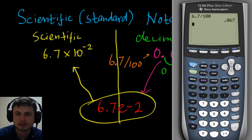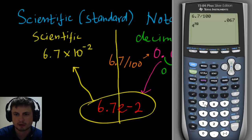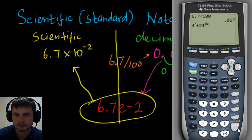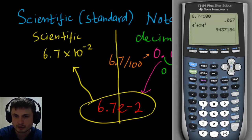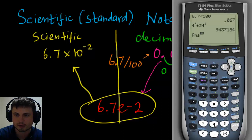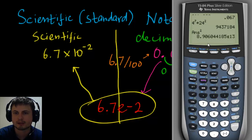Now let's multiply a bunch of numbers to get a really really large number. Let's try 4 to the power of 7 times 24 squared, then multiply that result by itself. Our calculator gives us 8.906E13. So what does that mean in scientific notation and in decimal notation?